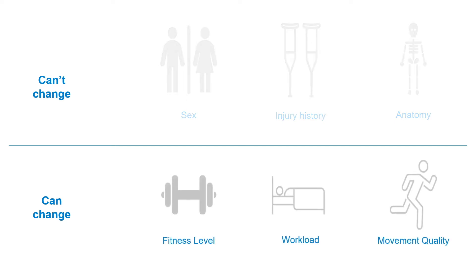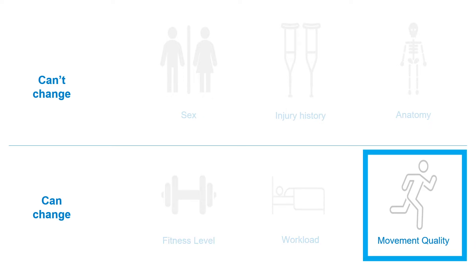The other category of risk factors are called modifiable risk factors — these are things that can be changed. These modifiable risk factors include things like low levels of fitness, including strength and flexibility, high workloads, which may result in inadequate rest and recovery, and poor movement quality, or the way an individual moves. While it's good to know a bit about the non-modifiable risk factors, it's more important to focus on the injury risk factors that are modifiable.